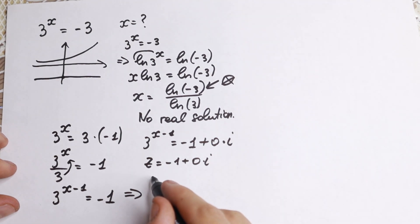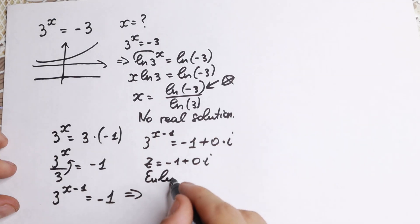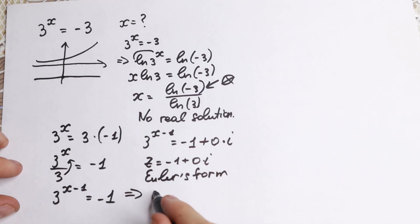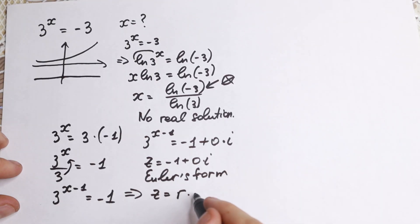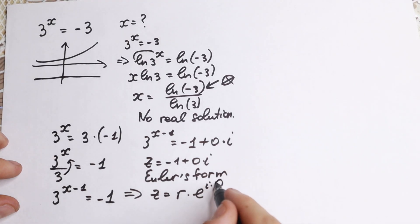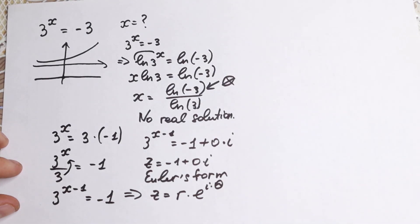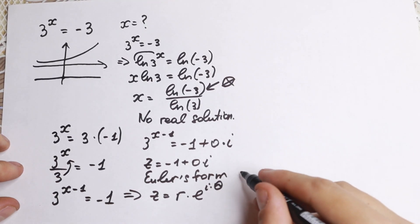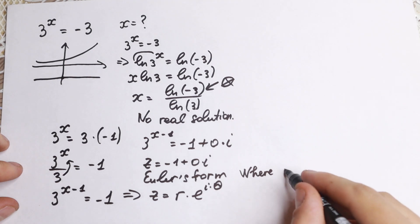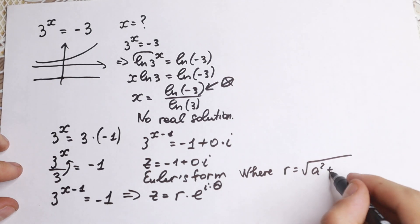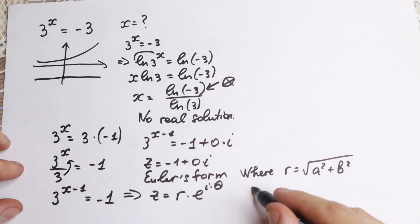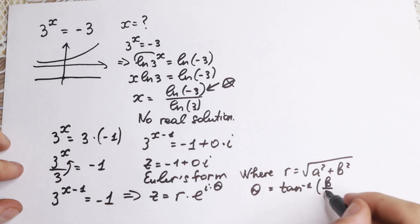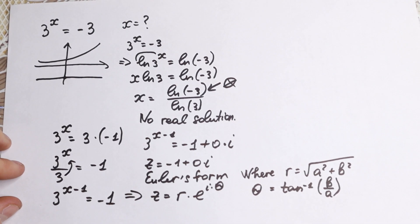Euler's form looks like this: z equals r times e to the power i times theta. Where r equals the square root of a squared plus b squared — the real and imaginary parts — and theta equals arctan of b over a.